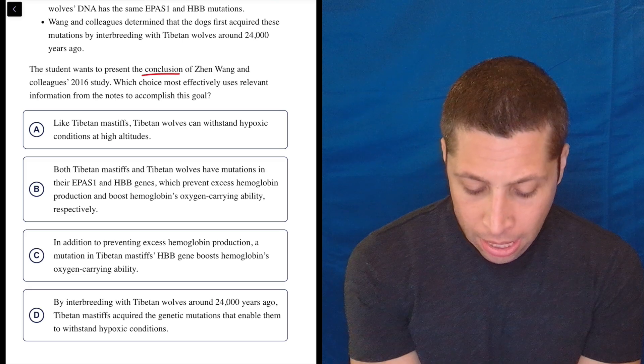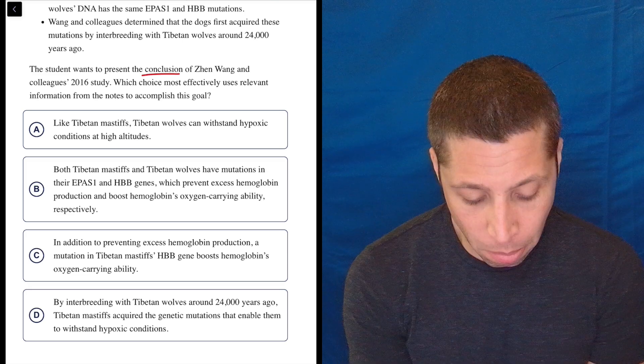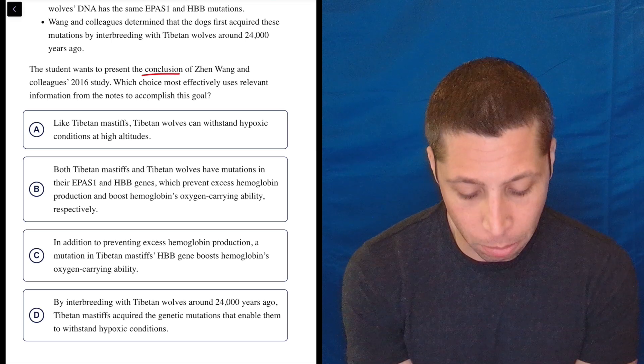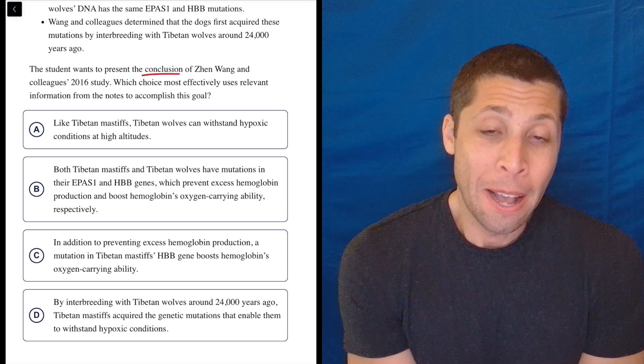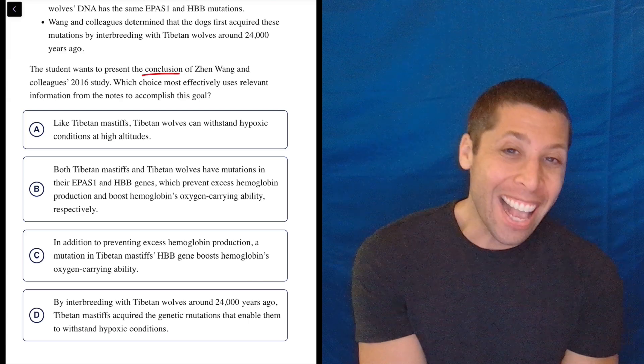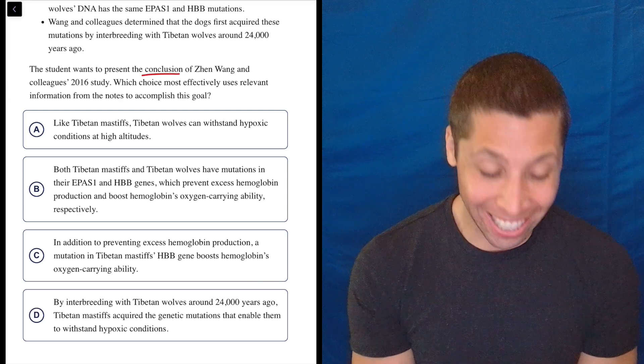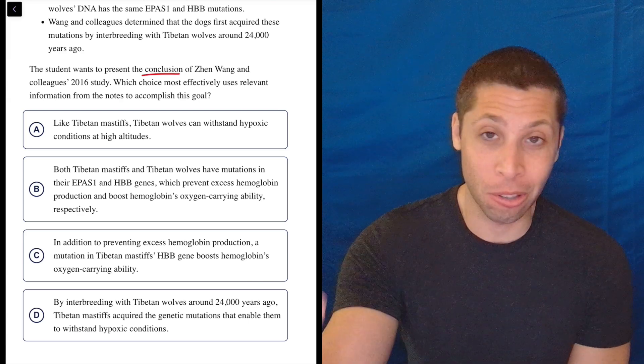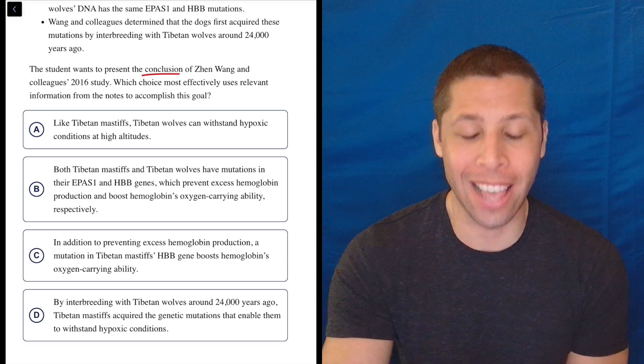C, in addition to preventing excess hemoglobin production, a mutation in Tibetan Mastiffs' HBB gene boosts hemoglobin's oxygen-carrying ability. Again, it's conclusion-y. It feels like it could be the conclusion of a study where, oh, we studied this gene and this is what we found. But why aren't you saying that?